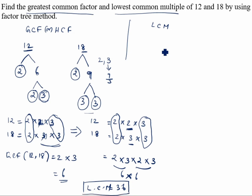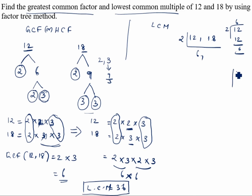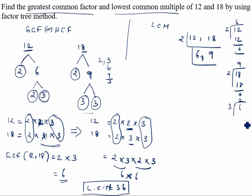Now I will teach you another way — the division method. Take 12 and 18. Divide by 2: 12 ÷ 2 = 6, and 18 ÷ 2 = 9. Now 6 is divisible by 2 but 9 is not, so move to the next number. Take 3: 6 ÷ 3 = 2 and 9 ÷ 3 = 3. Write 2 and 3. There is no more common factor.